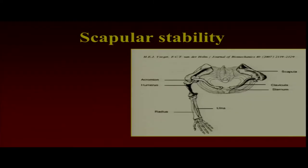I'm going to talk about the scapula in the context of what I called the disabled throwing shoulder yesterday. This has also relevance for workers and other people as well. I would like for you to remember this picture right here. This represents the arm, shoulder joint, scapula, and the clavicle. Remember that the arm is connected to the body very, very poorly from a stability standpoint, but very well from a mobility standpoint. You have to understand this whole triangular complex to understand how the arm works.